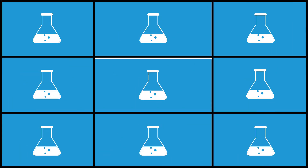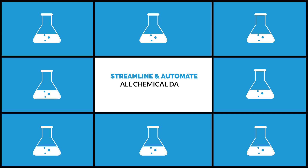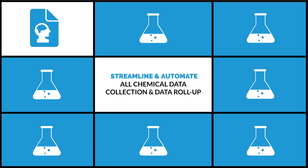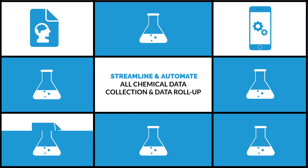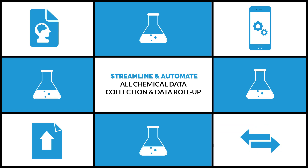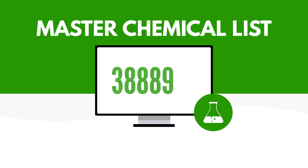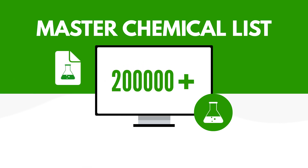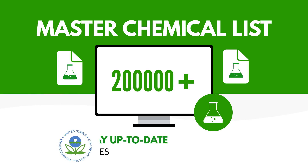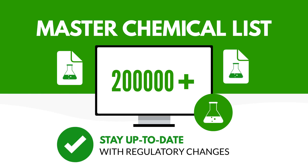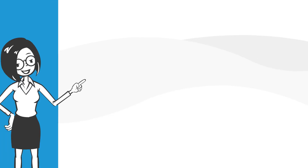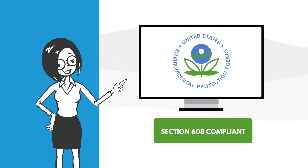The software empowers her to streamline and automate all her chemical data collection and data rollup with smart forms, mobile applications, mass data uploads, and electronic data transfers. She also benefits from access to ERA's robust master chemical list with over 200,000 chemicals and chemical regulatory records, which enables her to stay up to date with regulatory changes. ERA's platform is also updated to match the latest Section 608 changes.